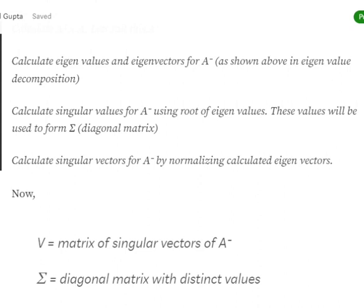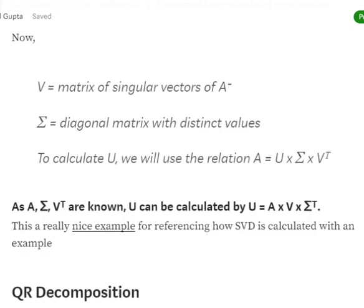SVD is essentially an extension of eigenvalue decomposition. In eigenvalue decomposition, we calculate eigenvalues and eigenvectors for the final representation. In SVD, we go one step further and calculate singular values and singular vectors. V is equal to the matrix of singular vectors of A-dash, and Sigma is the diagonal matrix with the distinct singular values.